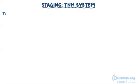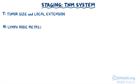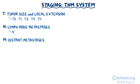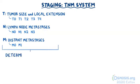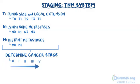Following imaging studies, esophageal cancer is staged according to the TNM system, where T means tumor size and local extension, N stands for lymph node metastases, and M stands for distant metastases. Each of these categories have substages — from T0 to T4, from N0 to N3, and M0 to M1 — and the combinations of these substages determine the esophageal cancer stage, from 0 to 4. The higher the number, the more the cancer has invaded and spread.